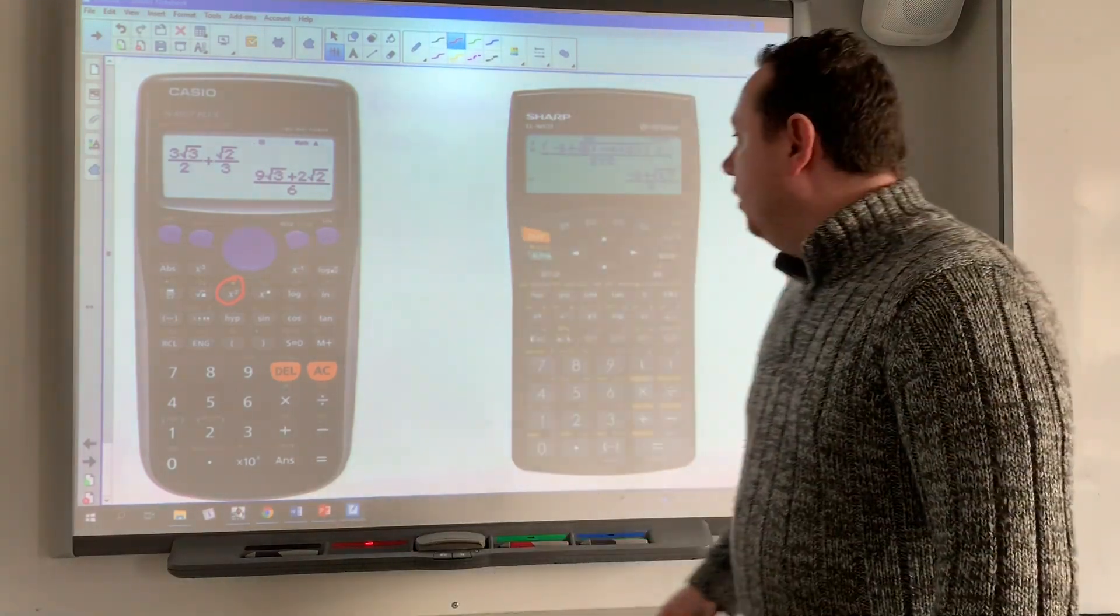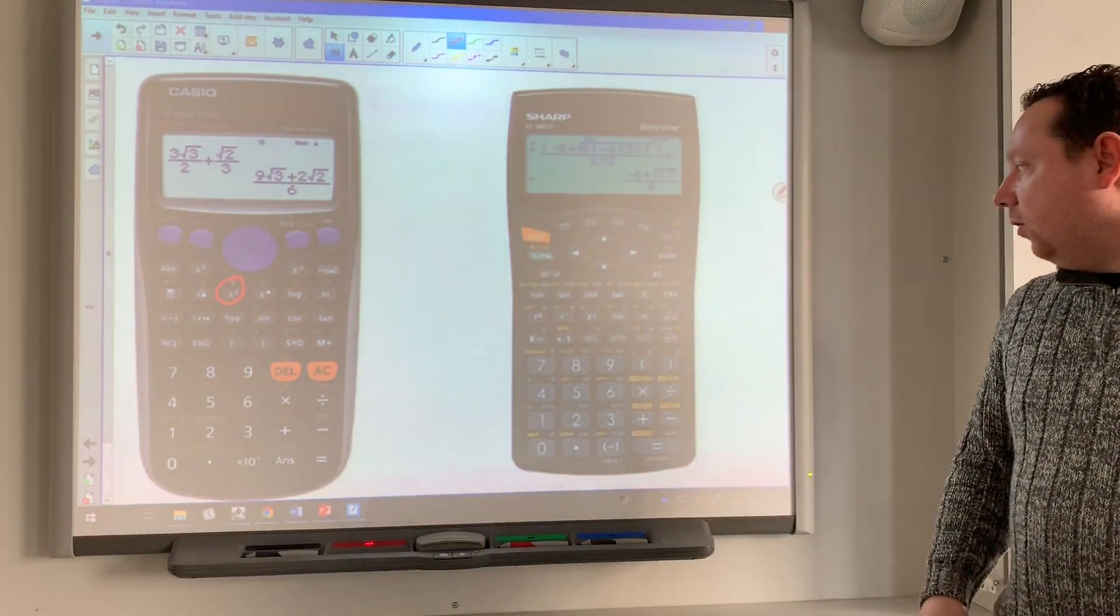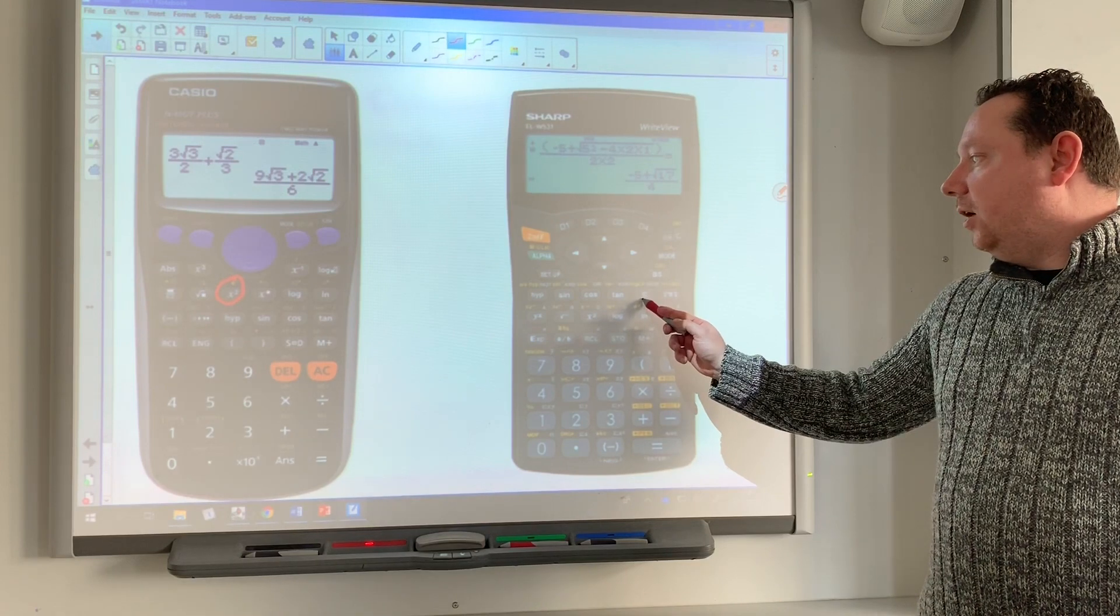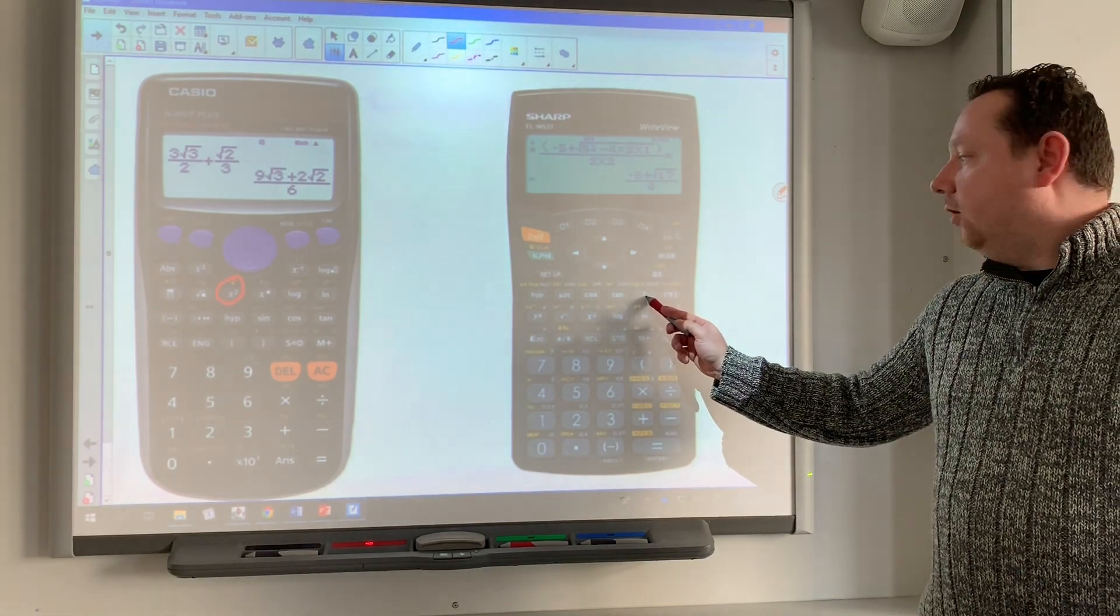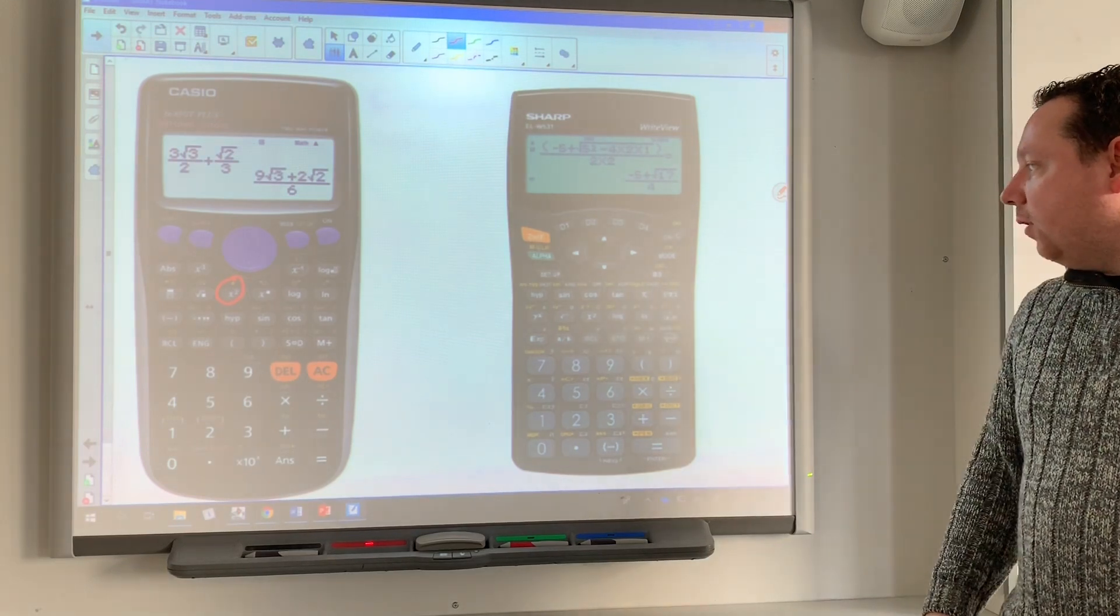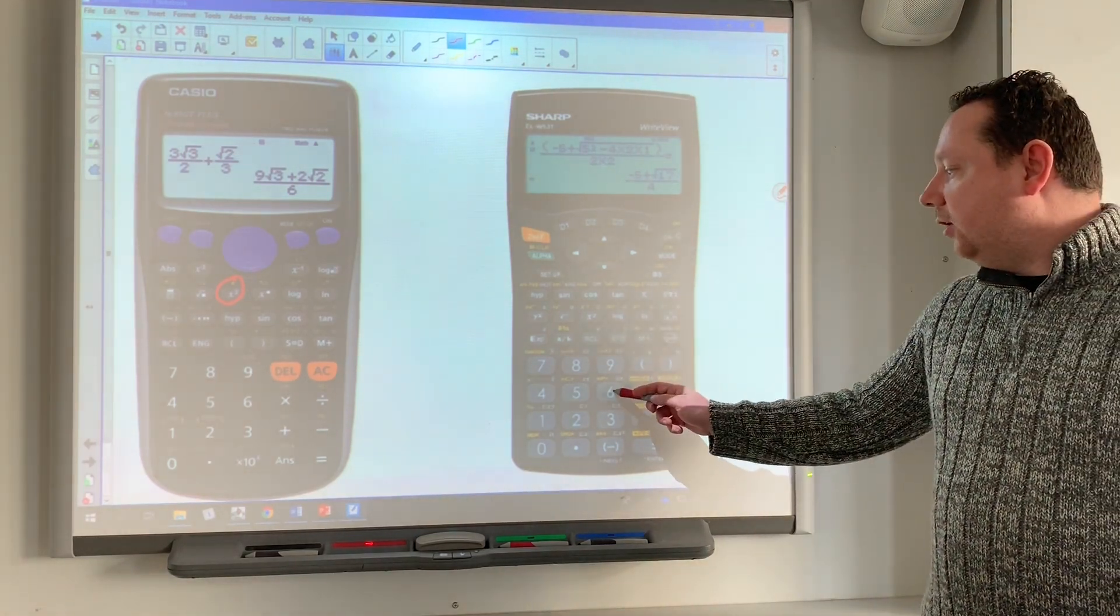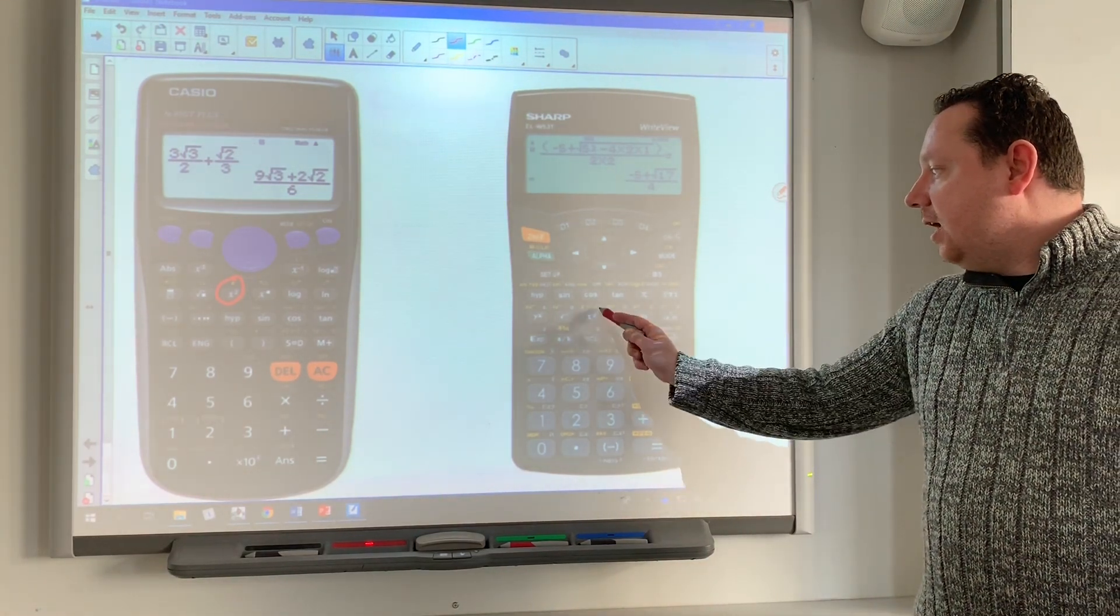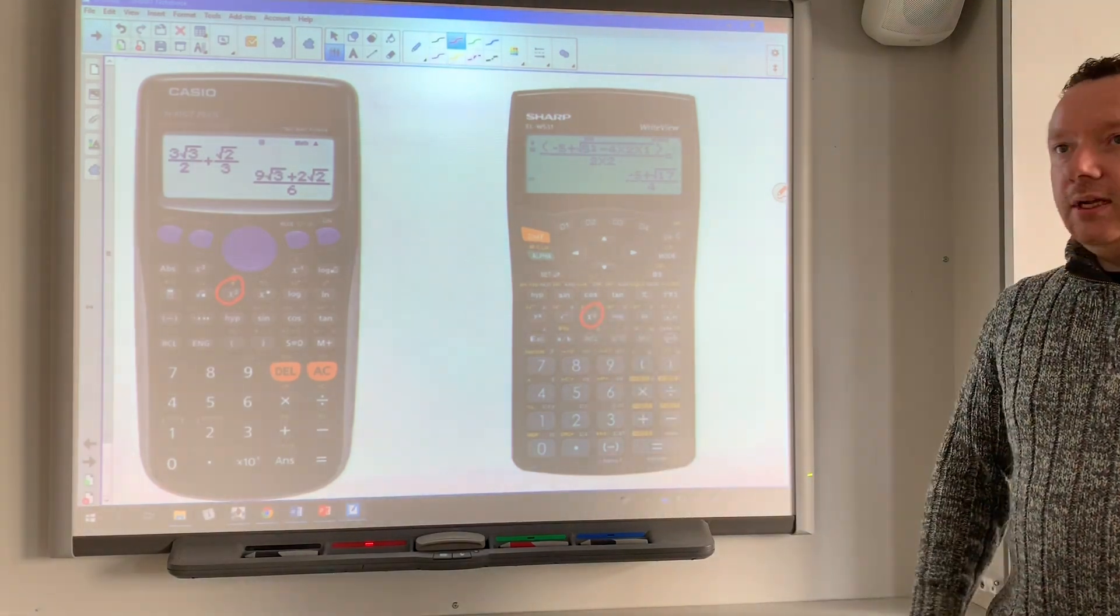On a Sharp calculator, the π button is just on the top line of the calculator, right here. The square button is very similar: press 6 and then use the x² button.